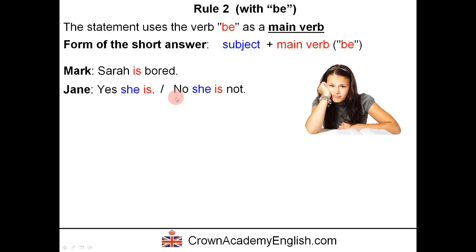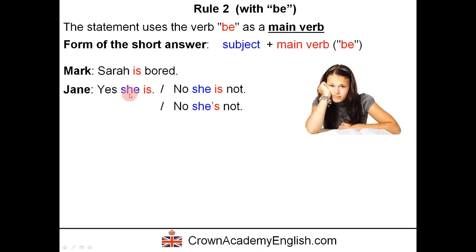If Jane disagrees, she says: no, she is not — meaning no, she is not bored. The contracted form is: no, she's not. Notice that when there is a noun or a person's name in the original statement, in the short answer we replace the name or noun with a pronoun — a personal subject pronoun. 'She' is used because Sarah is a girl. We also have an alternative contracted form: no, she isn't.